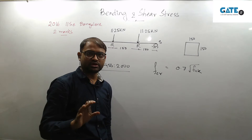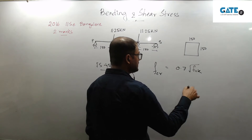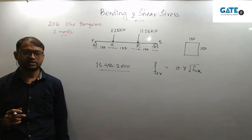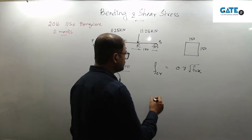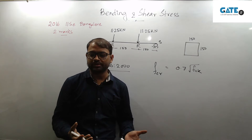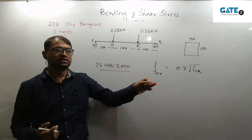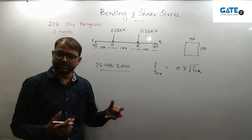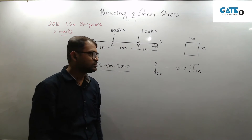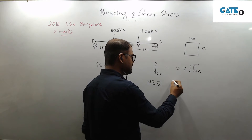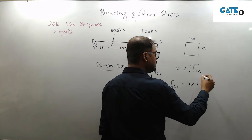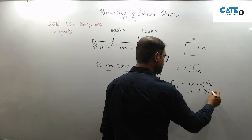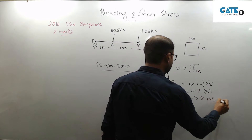For the time being, just forget about the problem. How can we calculate it? It is basically modulus of rupture — this is the strength parameter. For M25 grade of concrete, fck is the characteristic compressive strength after 28 days, that is 25. So, fcr is 0.7 into root over 25, that is 0.7 into 5 = 3.5 MPa. So this is your modulus of rupture.